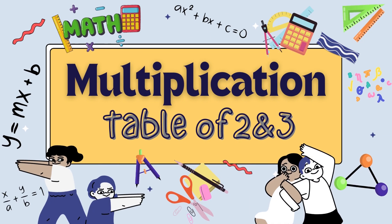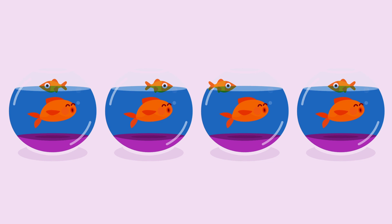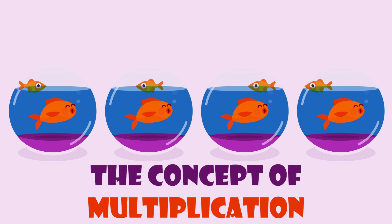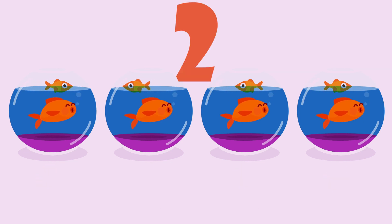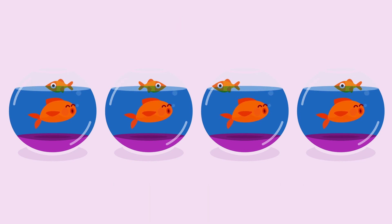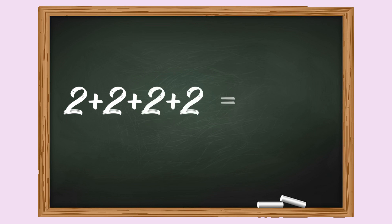Today we are going to learn the concept of multiplication and the table of two and three. Let's understand the concept of multiplication with the help of these little fish. There are four fish bowls; there are two fish in each bowl. To get the total number of fish, we add the number of fish in all four bowls: two plus two plus two plus two is equal to eight. There are eight fish in all.